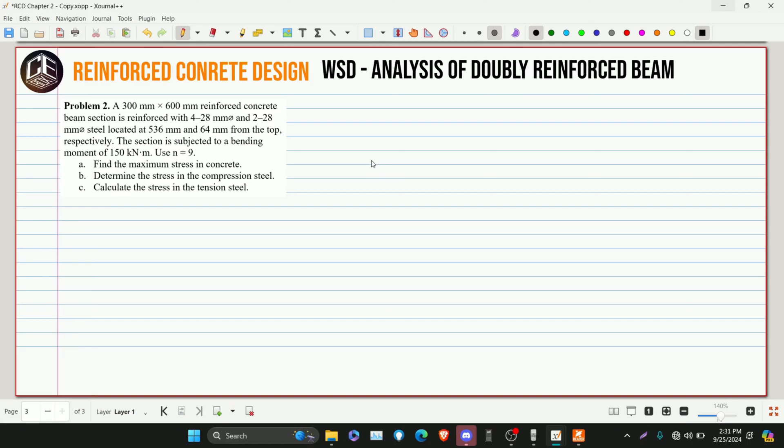This is our problem number two for WSD analysis of doubly reinforced beam. A 300 by 600 mm reinforced concrete beam section is reinforced with 4-28 mm diameter bar and 2-28 mm diameter steel located at 536 mm and 64 mm from the top, respectively. The section is subjected to a bending moment of 150 kNm. Use N is equivalent to 9. Find the maximum stress in concrete. Letter B, determine the stress in the compression steel. And letter C, calculate the stress in the tension steel.